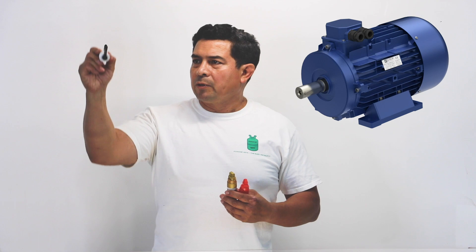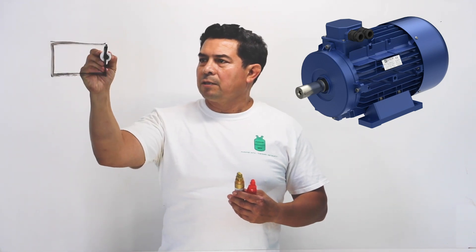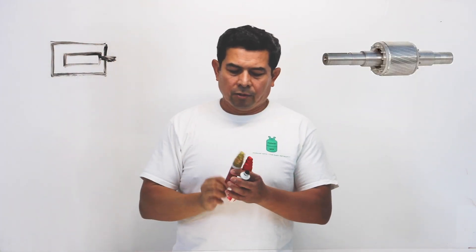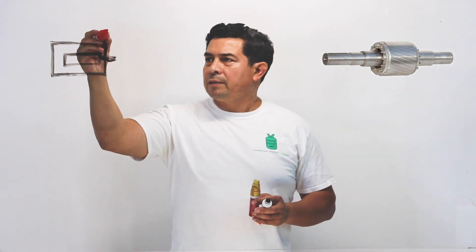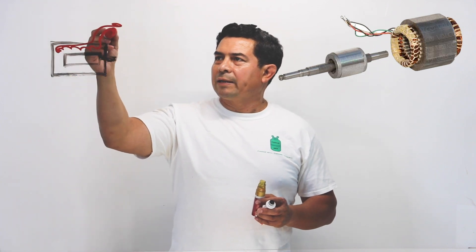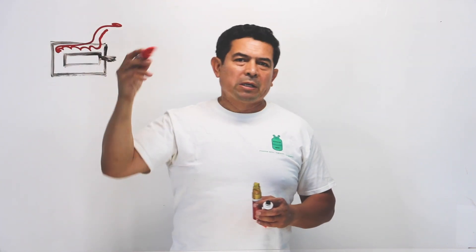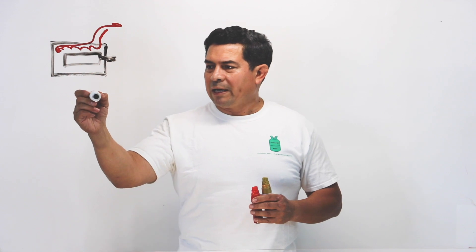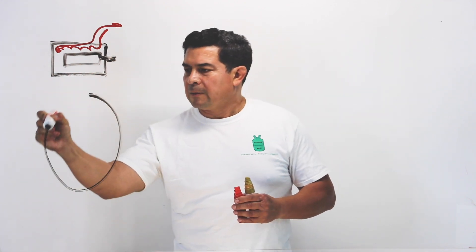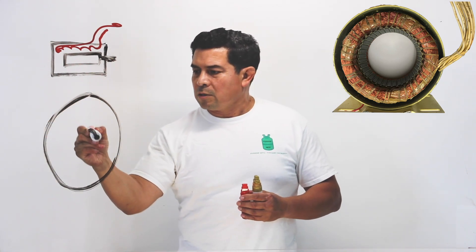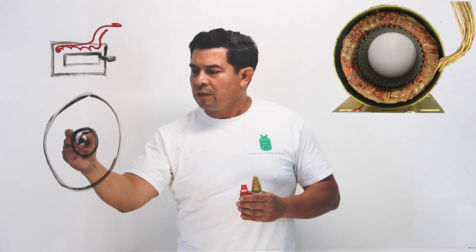When you have a motor like this, you have the rotor. That shaft is attached to the rotor, and then you're going to have the windings. When we look at a motor from the front or the back, it's going to look round like that, and inside that's where your rotor is going to be, with the shaft that's going to rotate.